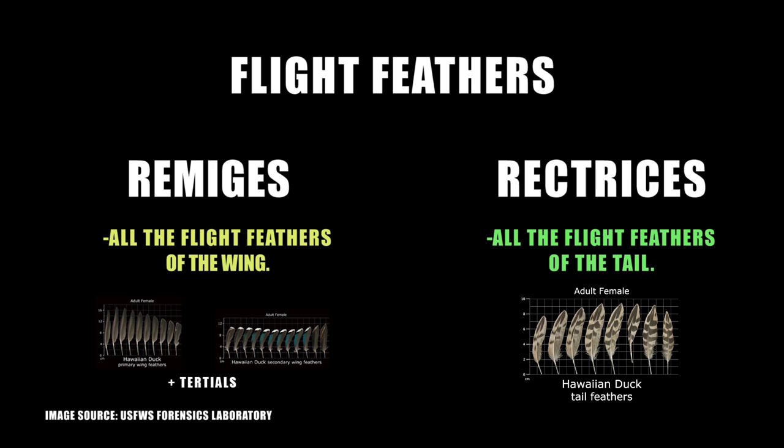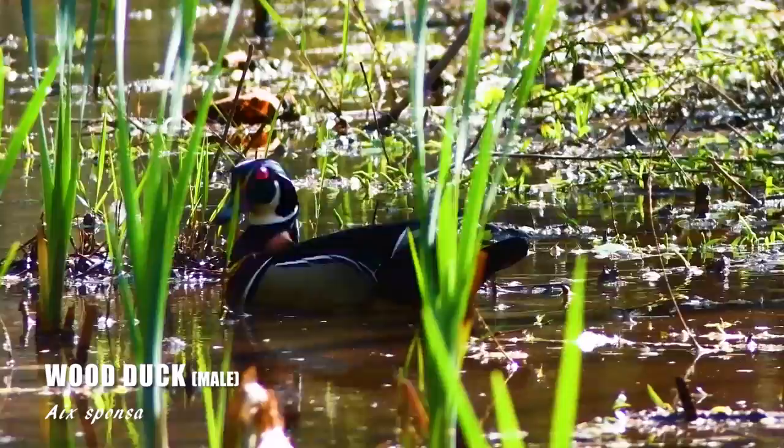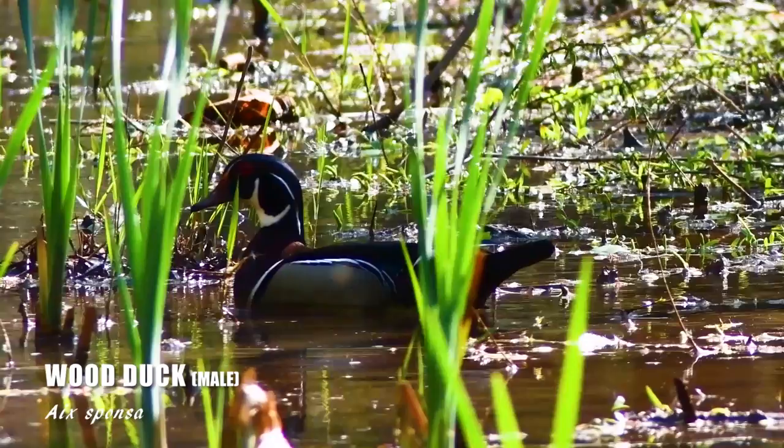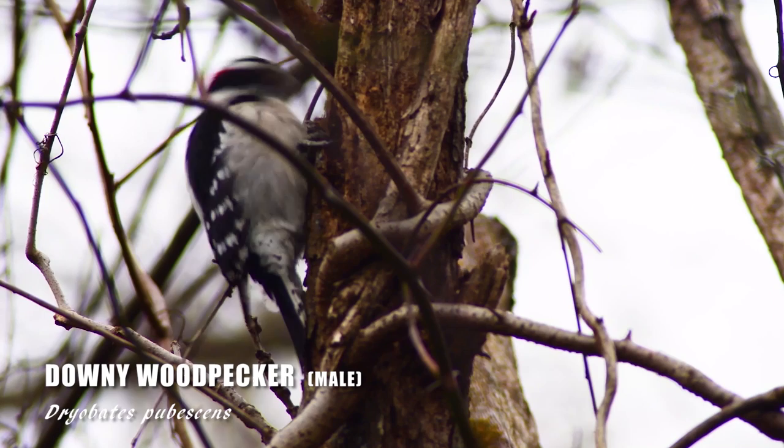Of course, there are other feather types all over a bird's body, but we won't get into that here. With many feathers on, say, the breast, you'd need a microscope to look at the microscopic properties of the barbules to identify what species it belongs to, and we aren't going to take it to that level.